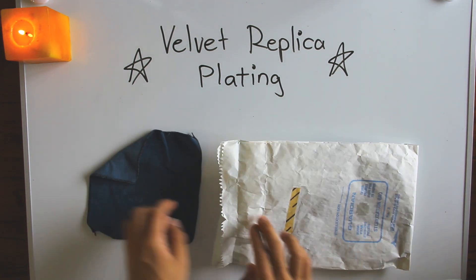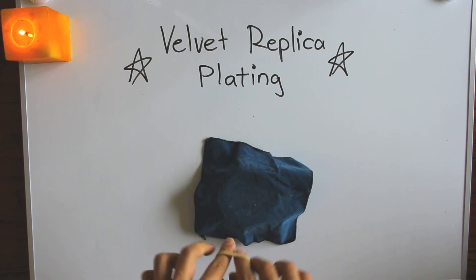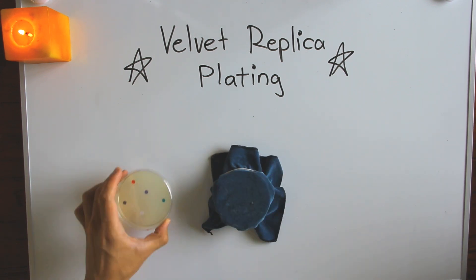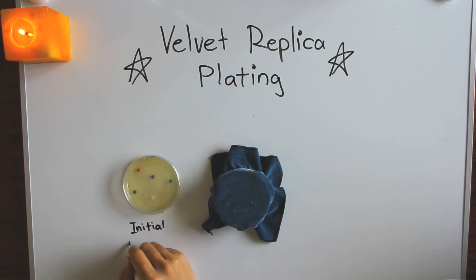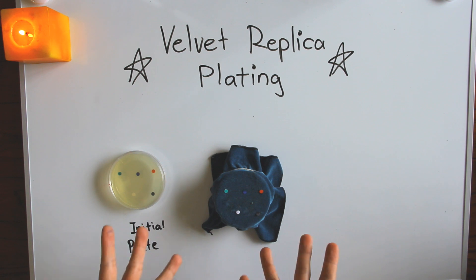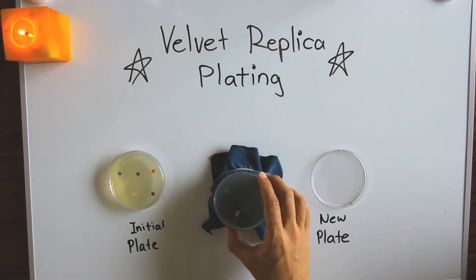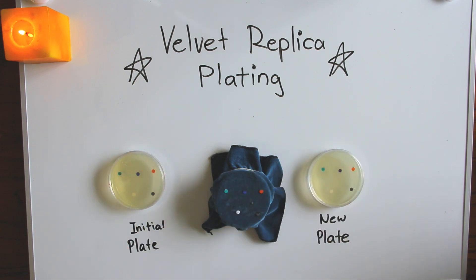First, a sterile velvet sheet is wrapped around a stamping block and secured with a rubber band. Then your initial plate can be stamped onto the velvet, and because of the velvet's surface, the bacteria colonies are absorbed into the fabric. Voila! You've essentially made a stamp of that plate. Now you can press other plates onto this stamp, and the colonies would be in the same place.